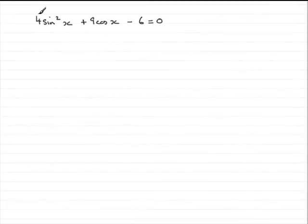Hi. Now this question, we're given that 4 sine squared x plus 9 cos x minus 6 equals 0. We've got to show that we can get this down to 4 cos squared x minus 9 cos x plus 2 equals 0.